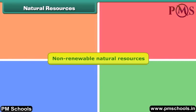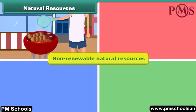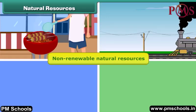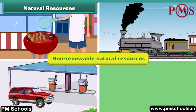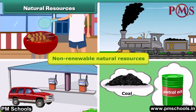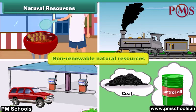Non-renewable natural resources are those resources that are limited in supply. They take years to form and get exhausted by continuous human use. For example, coal, petroleum etc. are non-renewable natural resources.